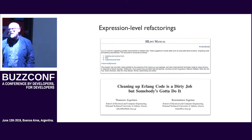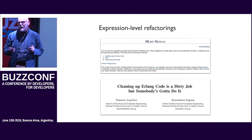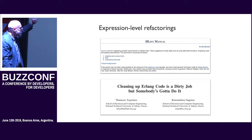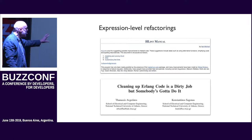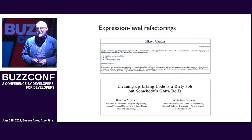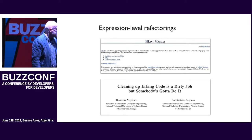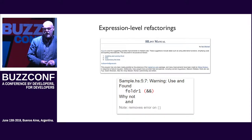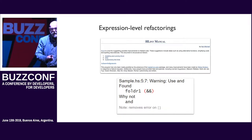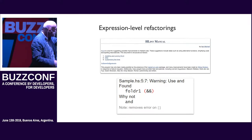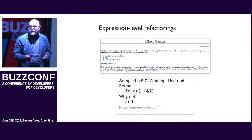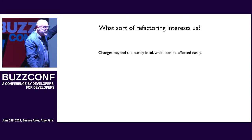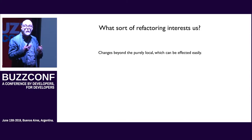Particularly if you look at functional languages, often what people mean by refactoring is just working at the level of expressions. There are tools to do this — a very nice tool, HLint, for Haskell, which Neil Mitchell has produced, and also a tool for Erlang that Kostas Sagonas and his colleagues have produced. These allow you to take a single expression and suggest improvements. That's helpful for enforcing style, but it's not the sort of thing I'm very interested in. What we're interested in is things which go beyond the local.